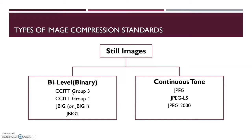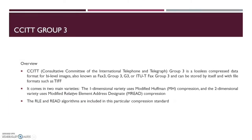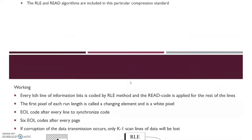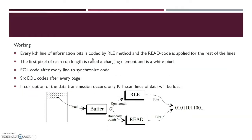Let's start with the CCITT Group 3. The Consultative Committee of International Telephone and Telegraph Group 3 standardization technique is a lossless technique, and it is primarily used for fax machines. What it uses is modified Huffman for one-dimensional compression and it uses the MREAD for two-dimensional compression.